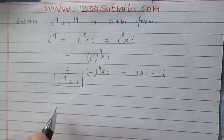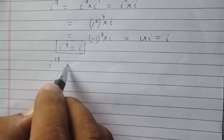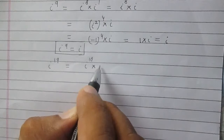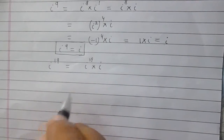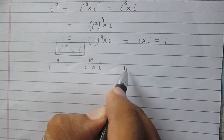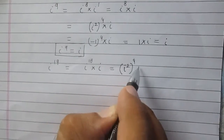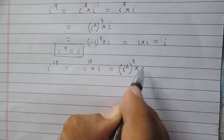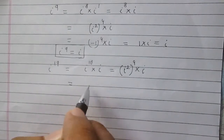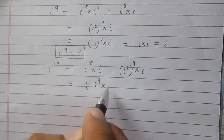Now consider iota raised to power 19. We can write it as iota raised to power 18 into iota raised to power 1, which is iota itself. Iota raised to power 18 can be simplified as iota square raised to power 9, and then iota. So iota square is minus 1, giving minus 1 raised to power 9 into iota.